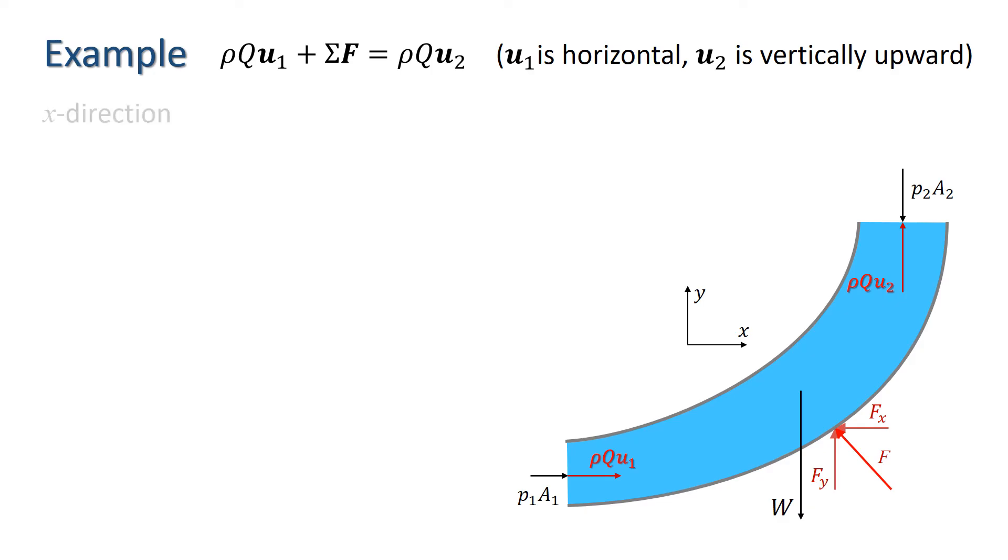In the x direction we have rho Q u1 plus P1 A1 minus the x component of the force of the bend on the water equals zero. Notice that the outgoing momentum has no horizontal component so there's a zero on the right hand side of this equation. We can rearrange this to find the x component of the force Fx.